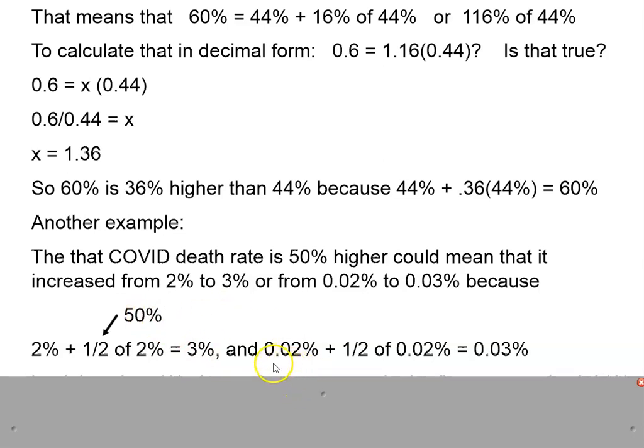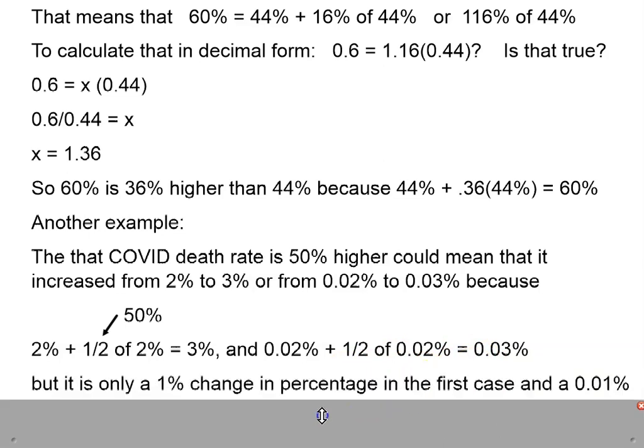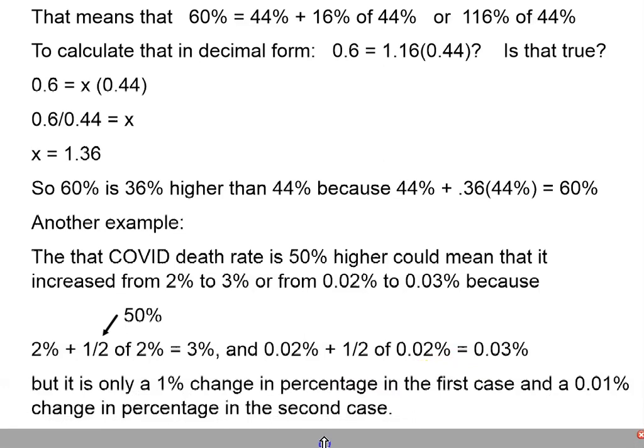And we could say that 0.02% plus one-half of 0.02% is 0.03%. So 0.03% is 50% higher than 0.02%. But it's only a 1% change in percentage in the first case and a 0.01% change in percentage in the second case.